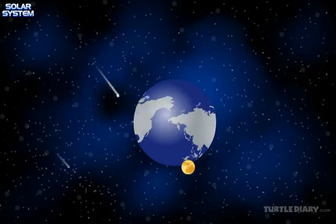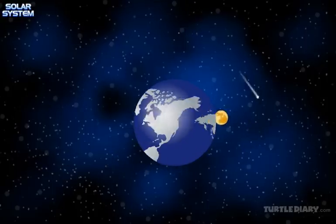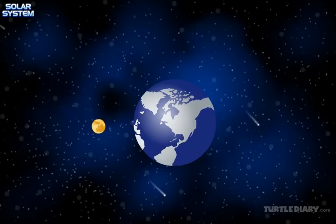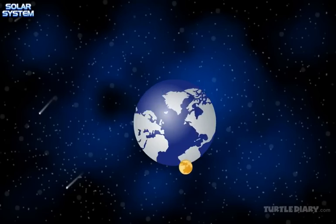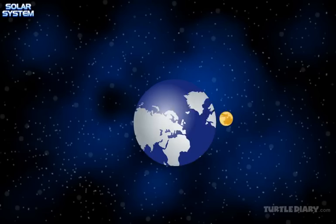The moon revolves around the Earth as well as the sun. It takes the moon approximately 28 days to revolve around the Earth.